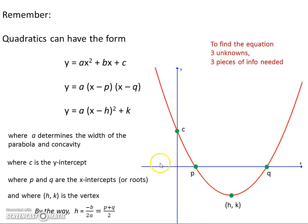Okay, in order to find the equation then we need three pieces of information. Not three equations to find the three unknowns, but three pieces of information. Now depending on what information we have we choose the best formula.